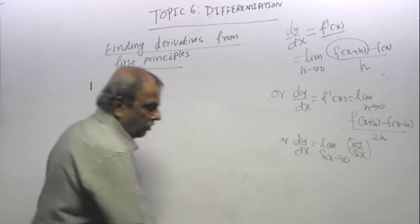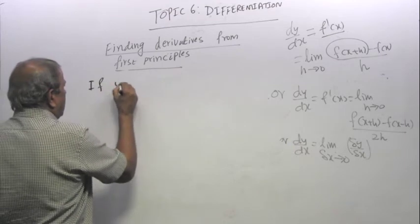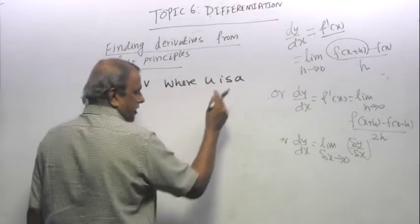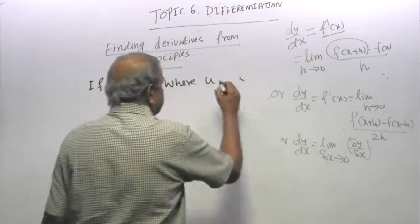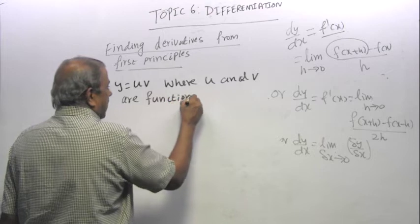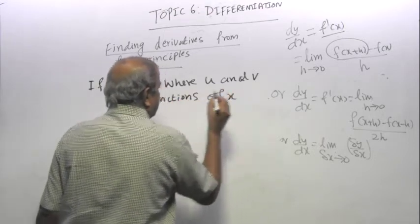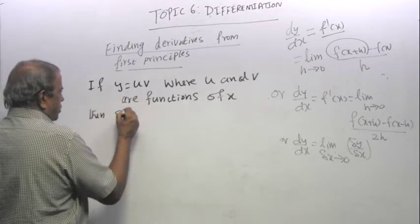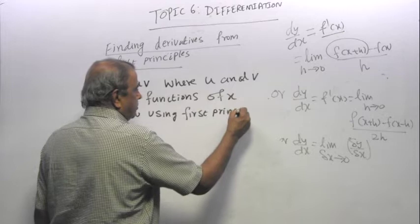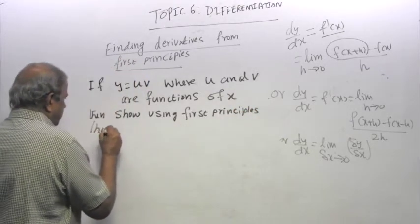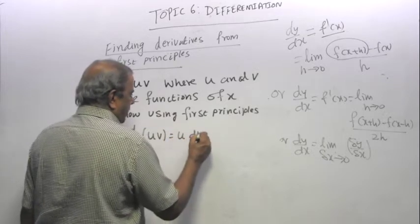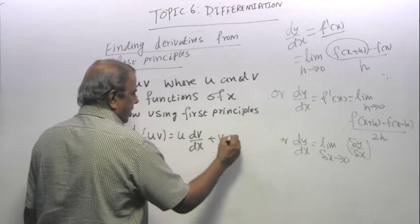So I want to go over this. If y equal to uv, where u and v are functions of x, very important, you cannot have a t and q, functions of x, then show using first principles that d over dx of uv equal to u dv by dx plus v du by dx. Does that ring a bell?